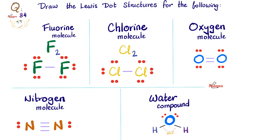For the water compound, we have a bent molecular structure with two lone pairs on the oxygen. If you want to know why water is bent, please watch my previous video titled VSEPR Theory.